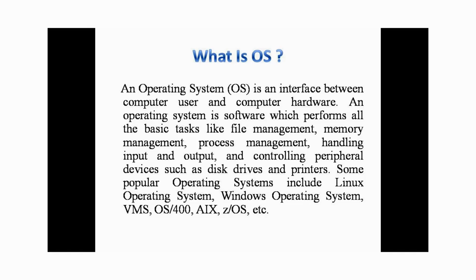An operating system is software which performs all the basic tasks like file management, memory management, process management, handling input and output, and controlling peripheral devices such as disk drives and printers. An operating system is nothing but a software — a set of instructions — which performs these basic tasks.